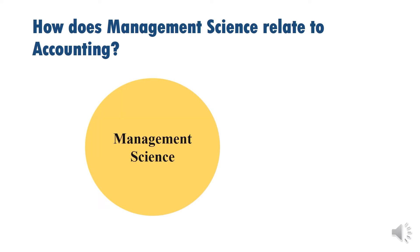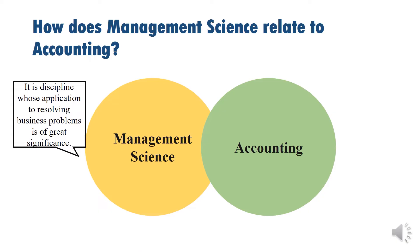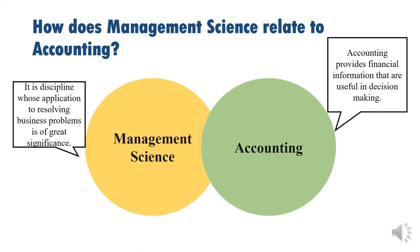Management Science is a discipline whose application to resolving business problems is of great significance. Accounting, on the other hand, provides financial information that is useful in decision-making. So Management Science and Accounting are actually related. Accounting provides financial information useful to stakeholders and decision-makers, while Management Science is an application of science to solving management problems. There is an interrelationship between Accounting and Management Science — they go together.